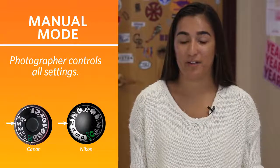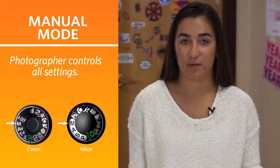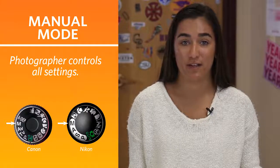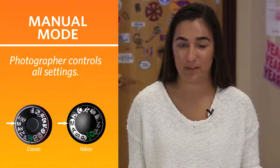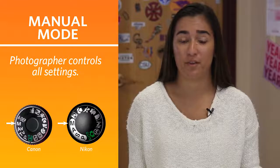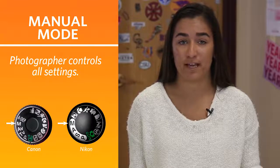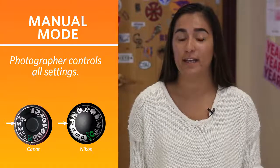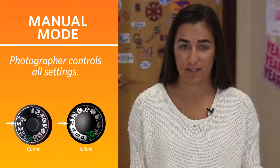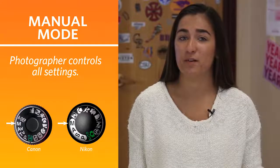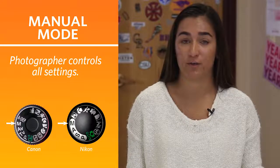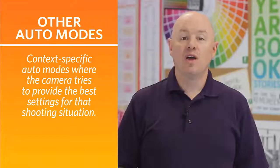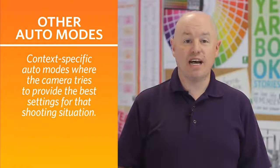The last setting on your camera is manual mode. Manual mode is marked by an M on both Nikon and Canon cameras. In manual mode, the photographer decides the settings for aperture, ISO, and shutter speed. This mode is best reserved for more advanced photographers or when you're shooting in a studio setting.